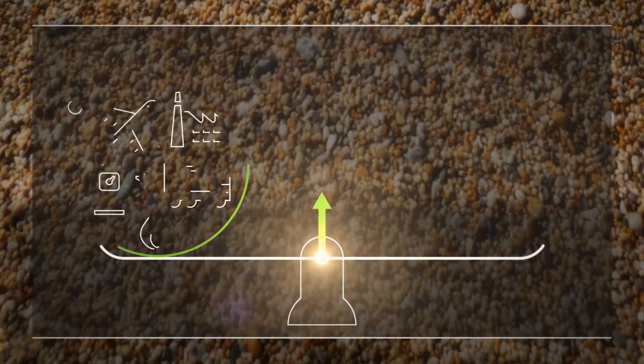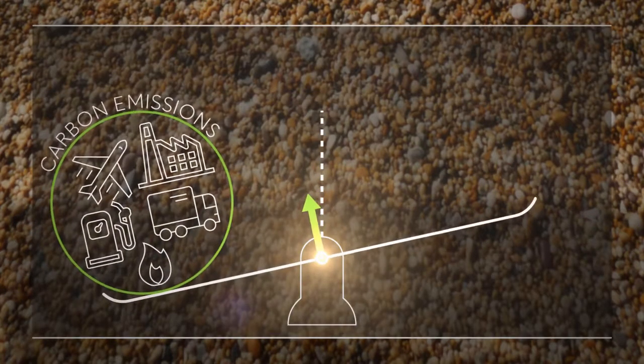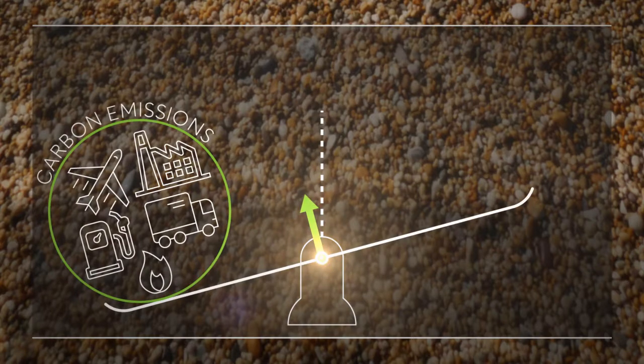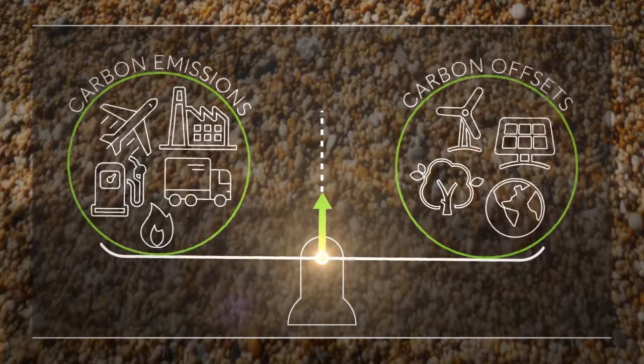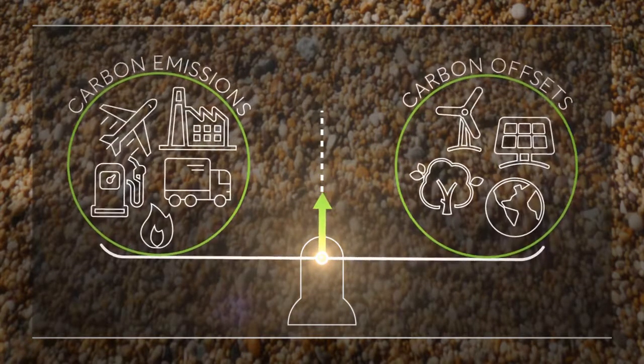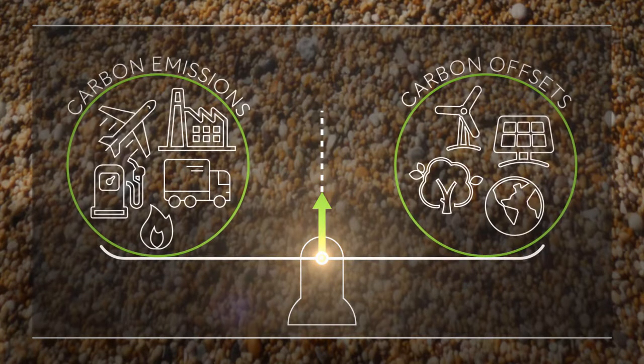Many businesses compensate for their impact on the environment by offsetting their carbon emissions. This means paying for an equivalent emissions saving somewhere else with the goal of becoming carbon neutral. For example, by offering financial support to renewable energy projects like installing wind farms.